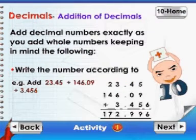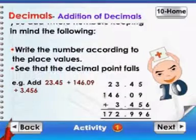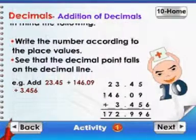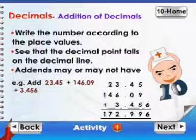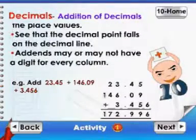Add decimal numbers exactly as you add whole numbers, keeping in mind the following. Write the number according to the place values. See that the decimal point falls on the decimal line. Addends may or may not have a digit for every column.